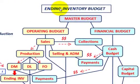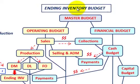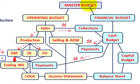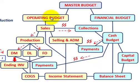What we're going to be going over here is the ending inventory budget — how we set it up and how we calculate it. Starting with our budget diagram, we begin with the master budget, which breaks into the operating budget and the financial budget. We'll follow the operating budget down.